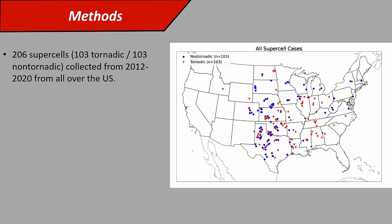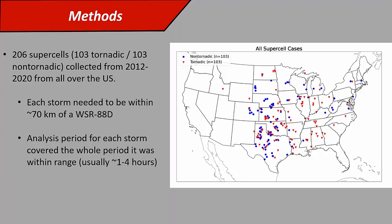For the methods, we gathered 206 supercell cases, evenly split between tornadic and non-tornadic storms from all over the US during the dual-pole era. In this plot, the blue dots are non-tornadic storms and the red ones are tornadic storms. We've got a pretty good geographic distribution. Each storm, we wanted to make sure we had good low-level data to look at low-level signatures like the ZDR arc. So we kept it to storms within about 70 kilometers of an 88D, and the analysis period for each storm covers the whole time within range of that 88D. It's generally between an hour and four hours that we had to look at.